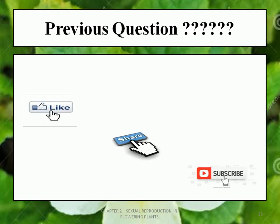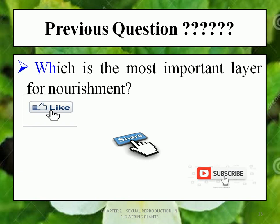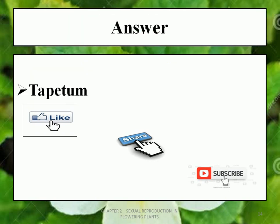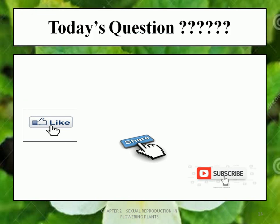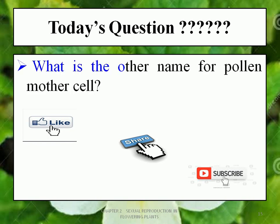Friends, now it's time to answer the previous question. Do you remember? The question was: which is the most important layer for nourishment? The correct answer is Tapetum. Now it's time for today's question: what is the other name for pollen mother cell? Answer in the comment box and watch my next video to know the answer.